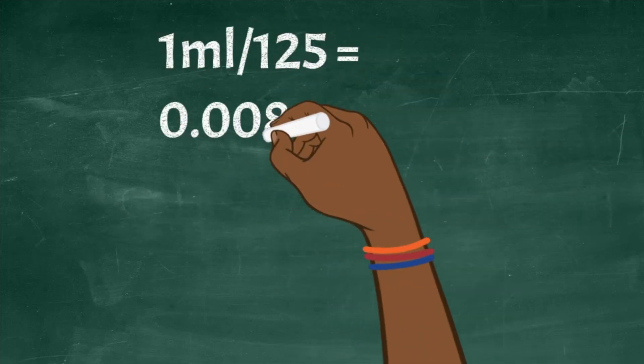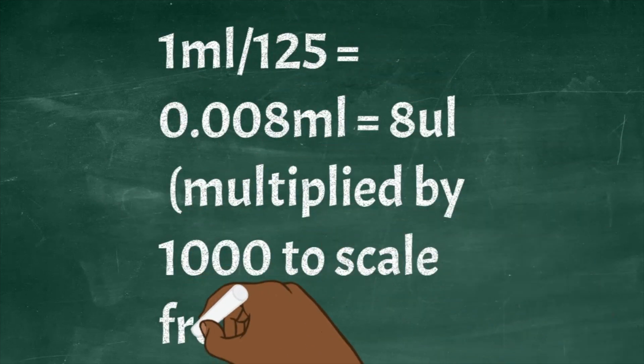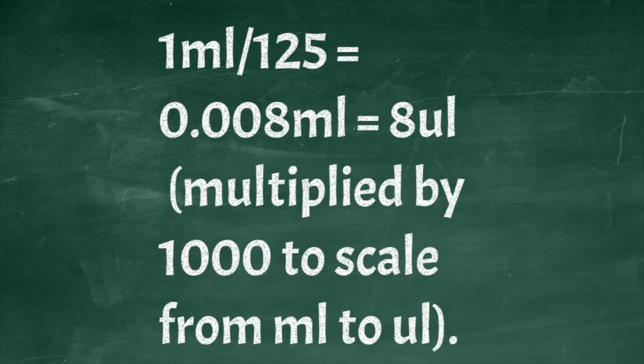Trying to pipette 0.008 milliliters in the lab is not as accurate, so you would tend to scale it up to microliters. In this case it would be 8 microliters, and we got there by multiplying the 0.008 by 1000, the conversion factor between milliliters and microliters.